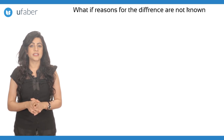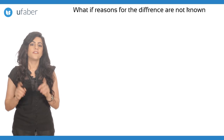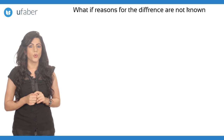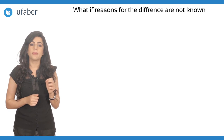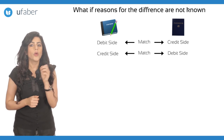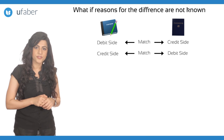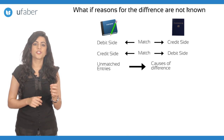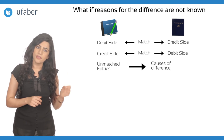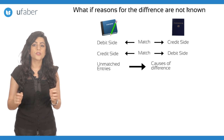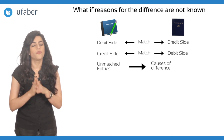So far, we learned how to reconcile the two books when the causes for the differences are given. But what if the reasons for the differences are not known? If the cause for the difference is not known, then we have to compare the debit entries of the cash book with the credit entries of the pass book and vice versa. The entries which cannot be matched with the corresponding entry in the other book are the causes of differences in the balances of both the books.